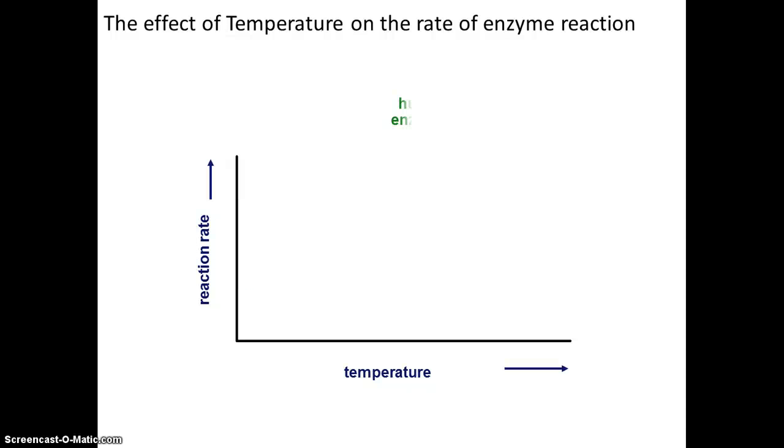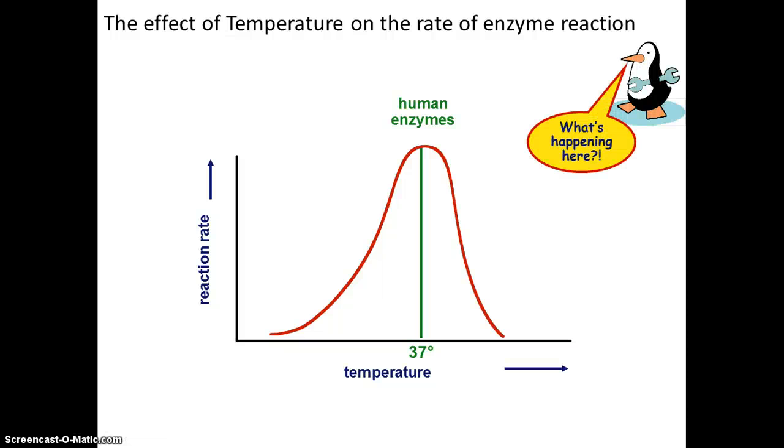So here, for example, you see the effect of temperature on the rate of enzyme reaction. Now, think about biological organisms. What are the range of temperature? So as humans, our temperature is about 37 degrees Celsius or 98.7 degrees Fahrenheit. So that's where most of our enzymes have the most rate of activity. But if you get too hot or too cold, then that reaction doesn't occur.